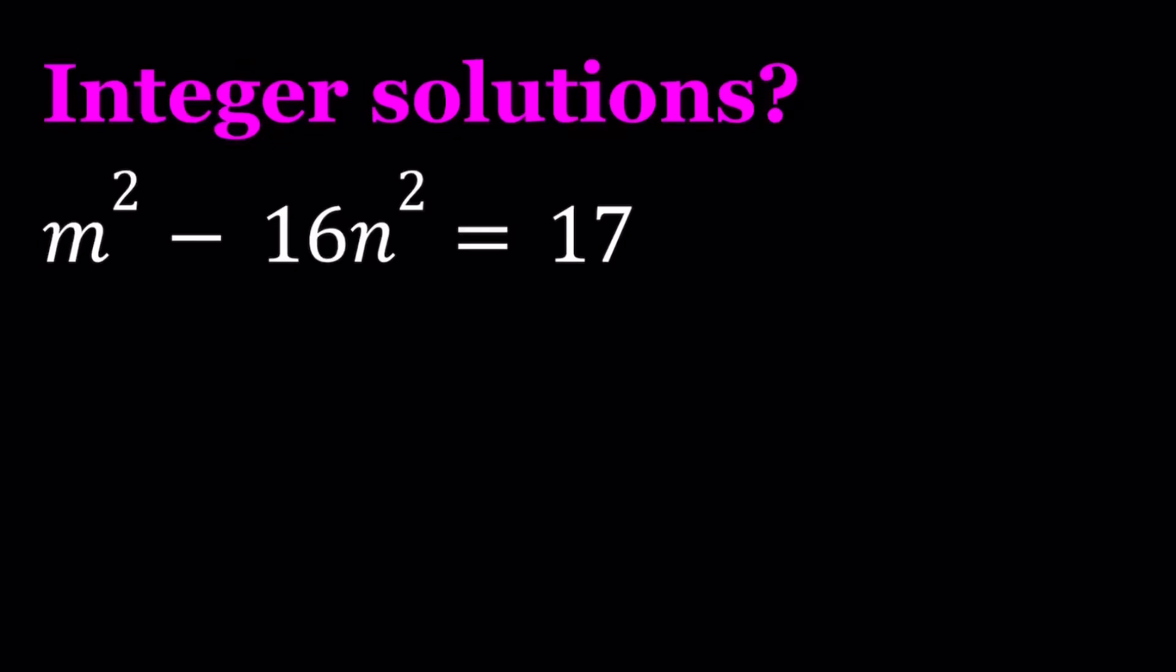Hello everyone. In this video, we're going to be solving a Diophantine equation, which is an equation with integer solutions. We have m squared minus 16n squared equals 17. And we're going to be looking for integer values of m and n.